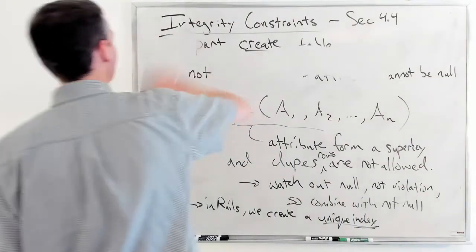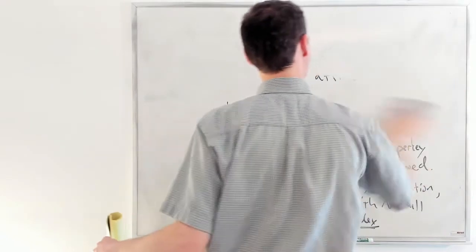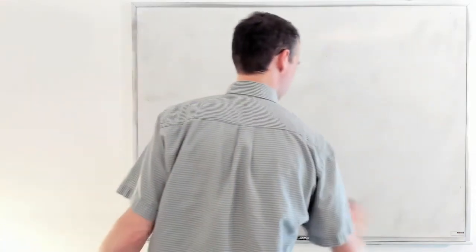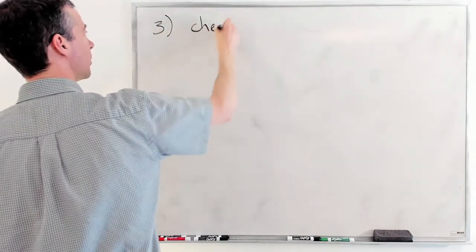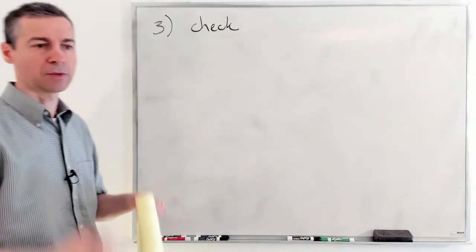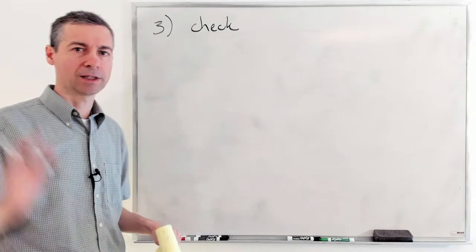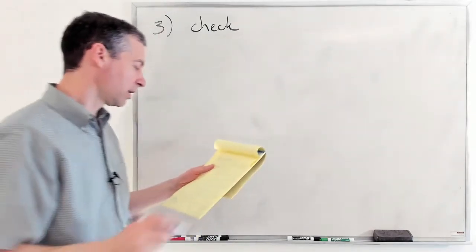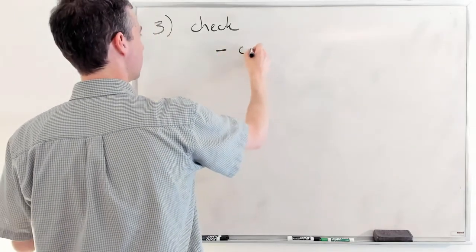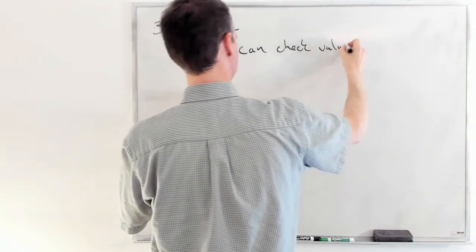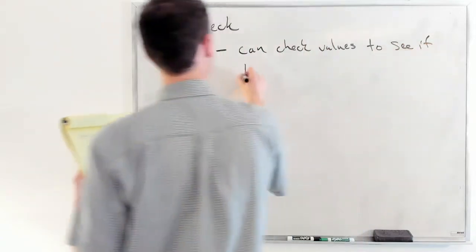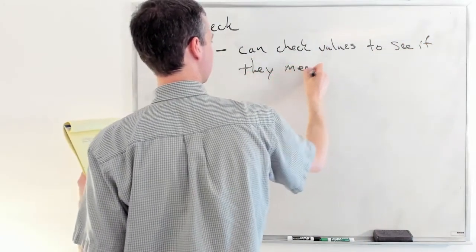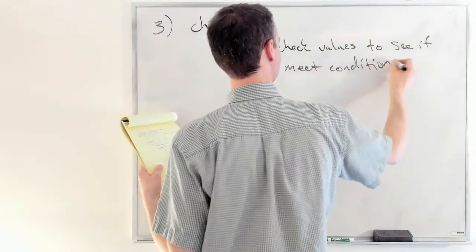Then there's also the notion of a check constraint. Some of you have seen the check constraint already in the university database as loaded into Codio. Some of you ran into it because you made it all the way to a problem on the homework that used it. And then we had to change that problem on the homework. So the check constraint, the nice thing, what it can do is it can go ahead and it can check values to see if they meet conditions.